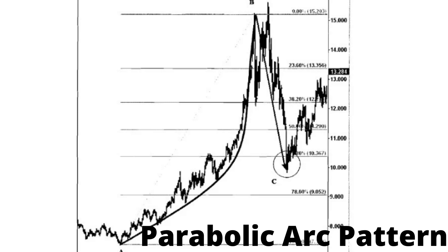In this chart, a parabolic arc formation from the silver futures chart is illustrated. In 2005, silver gained momentum as the metals sparked interest in the worldwide markets. Silver futures rallied from the mid-7 to 15 range in a 12-month period.